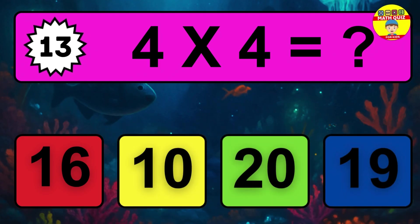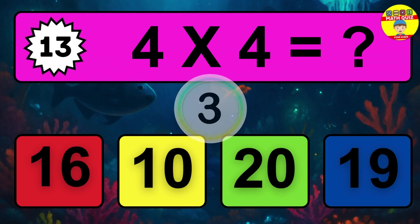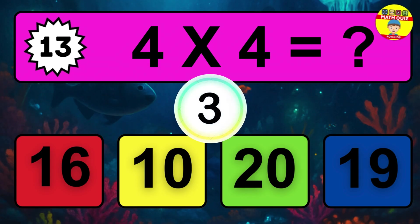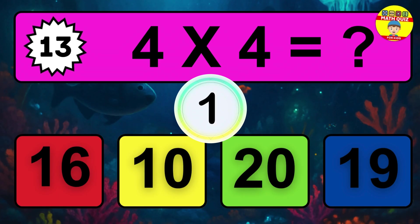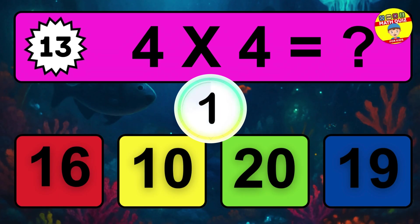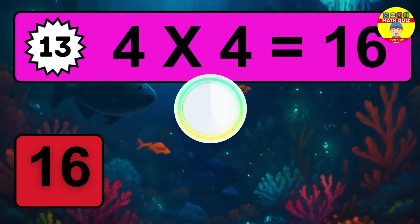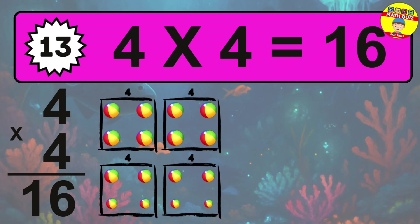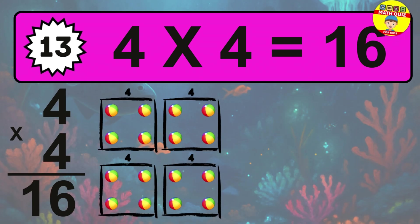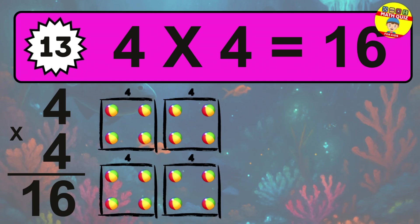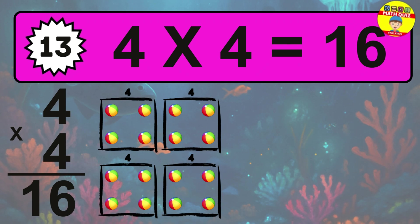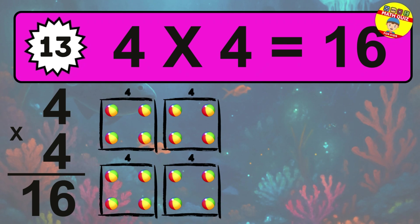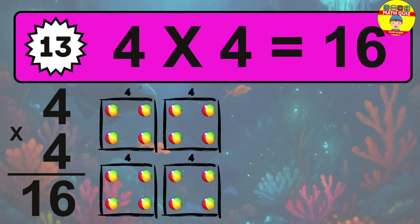Question 13. 4 times 4 equals what? The answer is 4 times 4 is 16. To calculate, we have 4 groups with 4 balls each one. So how many balls do we have? 16 balls.